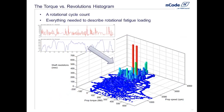If we're working with a powertrain component like something with gears or bearings — where we have a once-per-revolution or N-times-per-revolution fatigue cycle — then we're going to use torque and speed data to our advantage. We'll do what's called the torque versus revolutions histogram, sometimes called time at revs and torque, or revs at torque and speed. The general idea is we'll take the measured torque data in red and the input shaft speed data in blue, and produce this torque versus revs histogram.